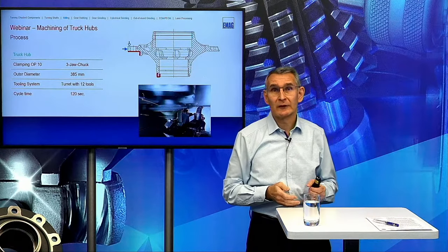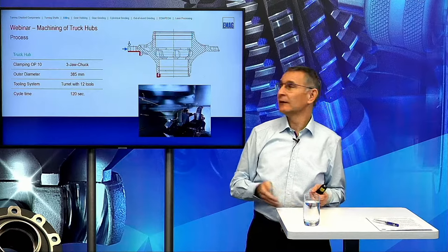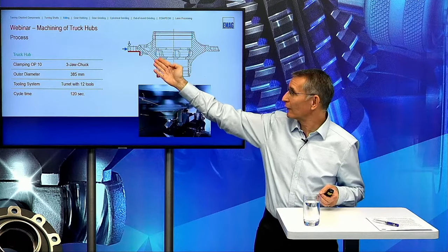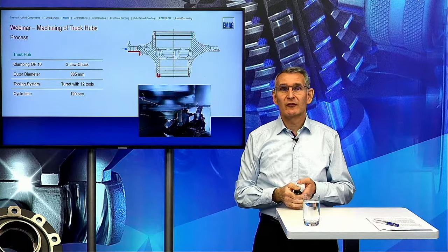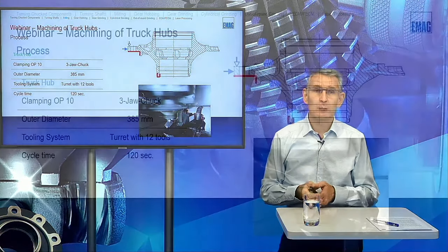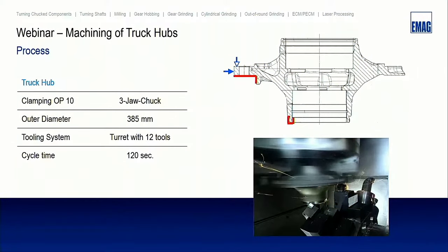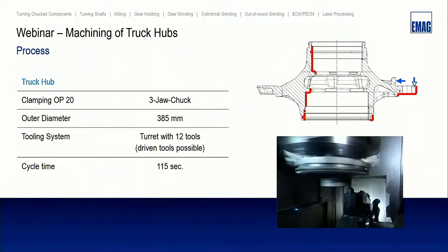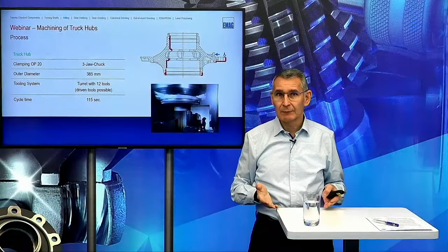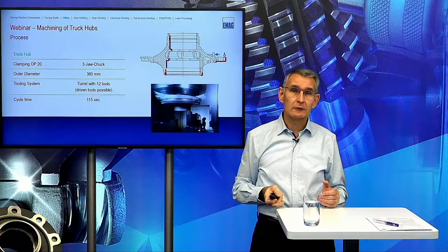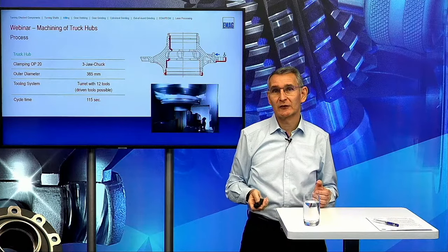Now a closer look at the first setup, OP10. Here we typically clamp on the OD, doing rough cutting of the first areas and sometimes finish cutting. We use our turning machines, normally with 12 magazine places for turning, plus driven tools if necessary for drilling, with a cycle time of 120 seconds. After turning the part 180 degrees, OP20 uses the same machine type with a four-jaw chuck clamping on the OD, 12 tools on the turret, and a cycle time of 115 seconds.